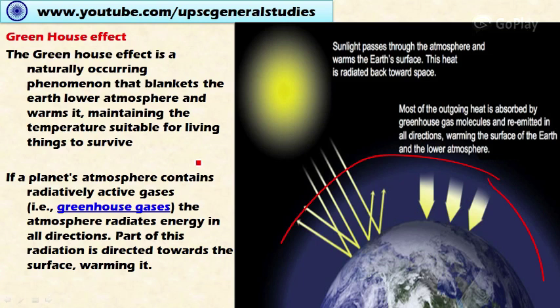Since our Earth's atmosphere contains greenhouse gases, the atmosphere radiates energy in all directions. These greenhouse gases absorb the Earth's energy and radiate it in all directions, providing favorable conditions for living beings within the planet by maintaining warmer climatic conditions.